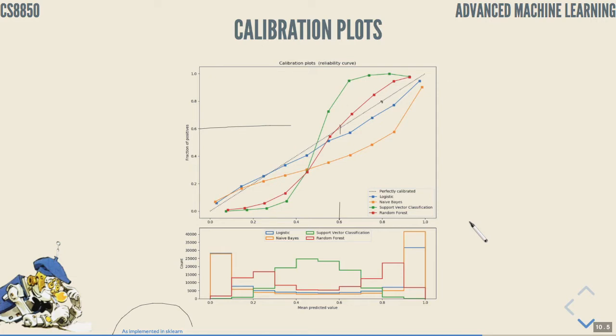They compared logistic regression, naive Bayes classifier, support vector machine, and random forest. Among those four, we only haven't closely looked at random forest, but it's basically boosted decision trees. What we have here, as you see from the first top plot, logistic regression, this blue line here, is the closest to the perfect calibration. Surprised?